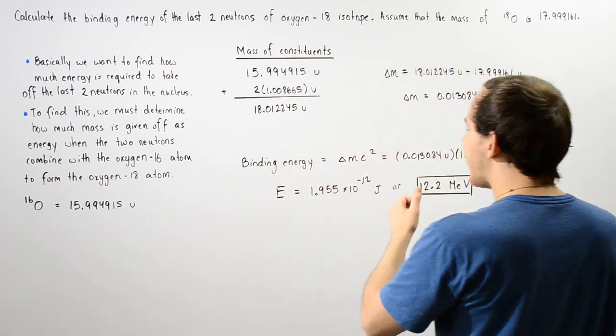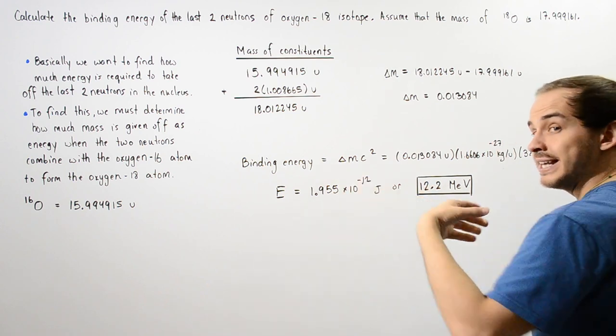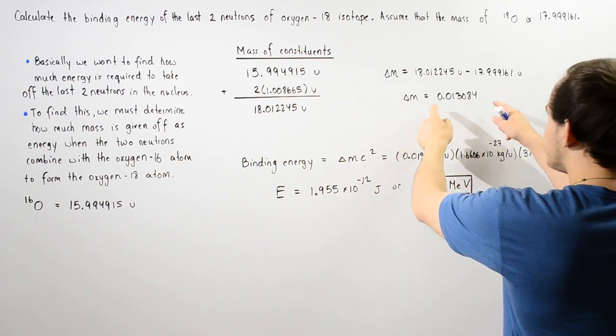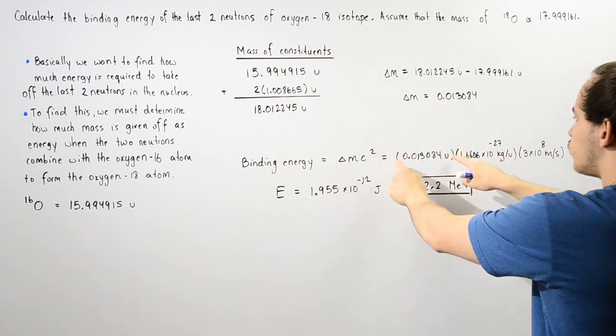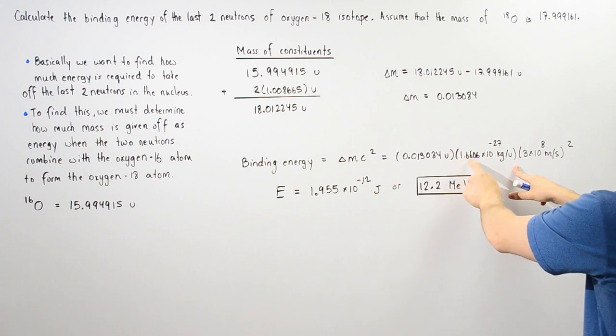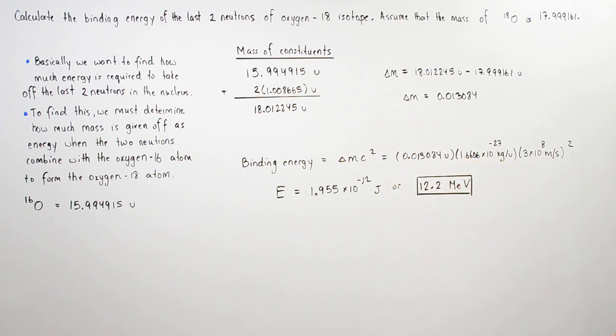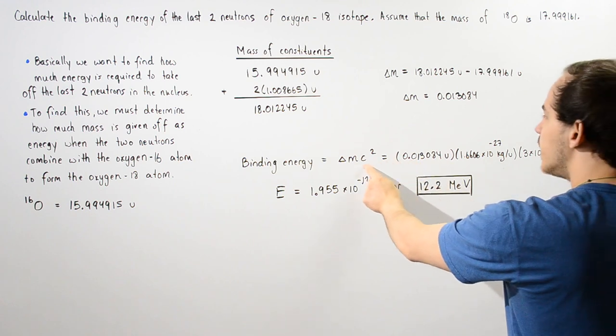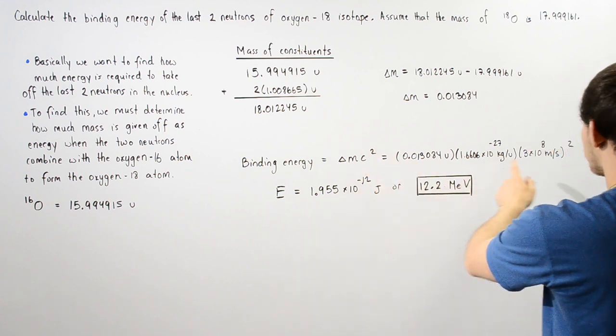The binding energy is Δm in kilograms multiplied by c squared. To convert this into kilograms, we multiply by the conversion factor of 1.6606 × 10⁻²⁷ kilograms per u. The u's cancel. We're left with the mass in kilograms, and we multiply by the speed of light in a vacuum squared.